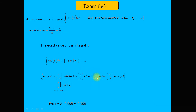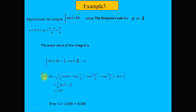Adding the step size repeatedly gives x = 2π/4, 3π/4, and finally π, which is the last x-value. Calculating sin(0), sin(π/4), sin(2π/4), sin(3π/4), and sin(π) using a scientific calculator and substituting y₀ through y₄ into the Simpson's rule formula for four steps gives the approximate result of 2.0045.